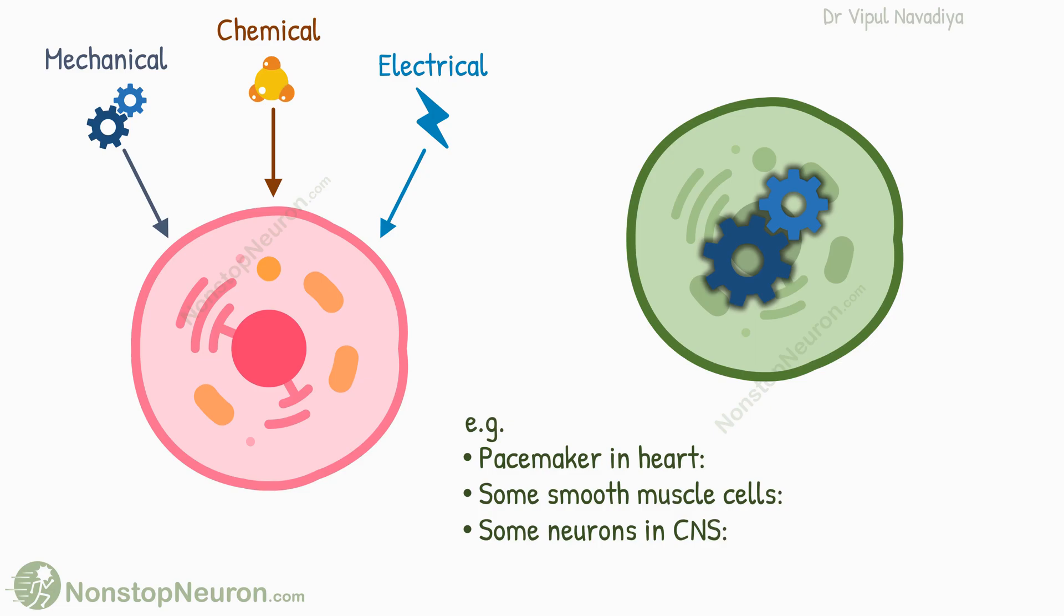This capability plays a very important role in these cells. For example, pacemaker tissues produce rhythmic heartbeat. Smooth muscles of the intestine produce rhythmical peristaltic movement. And in CNS, it helps control breathing.